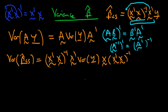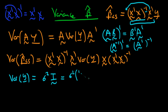Now it comes to the stage where we use a particular assumption: we assume that the variance of our dependent variable Y is equal to σ²I. Writing it in this form, we've assumed homoscedastic errors, because each of our Y's has constant variance equal to σ². And we've assumed no serial correlation, because the identity matrix has zeros in all off-diagonal positions, meaning no correlation between errors.